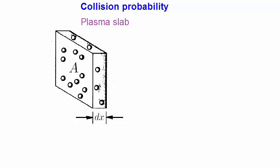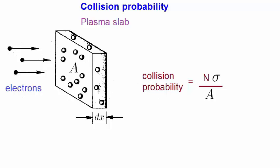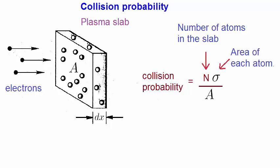We stated previously that the cross section is somehow related to the probability of a collision. Let's look at this explicitly. We start by considering a plasma slab of thickness dx and a cross sectional area of A. We now have an electron beam heading towards the slab, and we need to work out the probability of these electrons striking an atom in the slab as they traverse to the other side. The collision probability is given by this equation, where n is the total number of atoms in the slab, and sigma is the cross sectional area of each atom. And we divide by the total area of the slab.